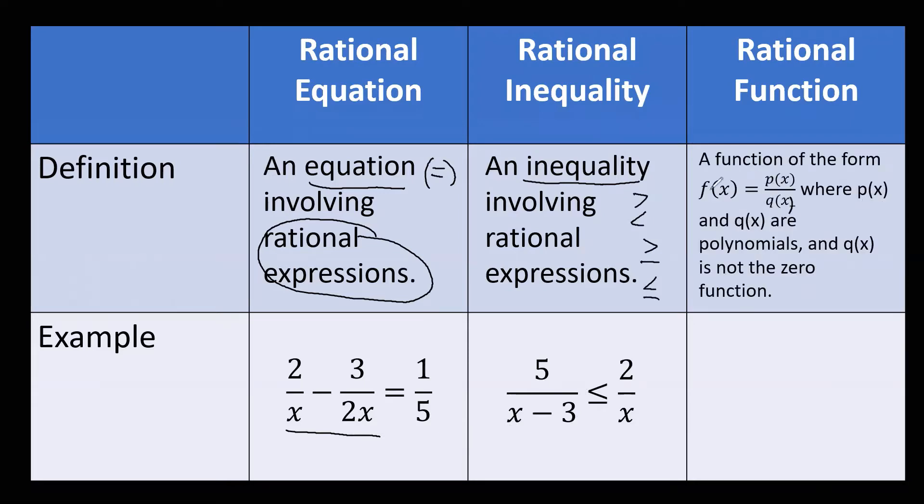Rational function: a function of the form f(x) = p(x)/q(x), where p(x) and q(x) are polynomials. When you say polynomials, it has variables and exponents, and the exponents must be positive. So take note: polynomials have no negative exponents or radicals.